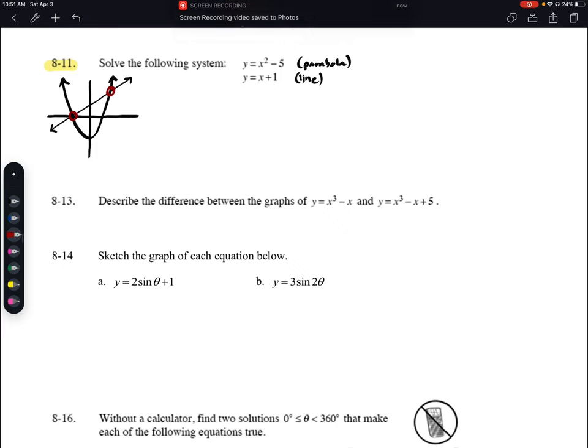Let's use substitution. If y equals x squared minus 5 and y equals x plus 1, then we can set x plus 1 equal to x squared minus 5 and solve it.